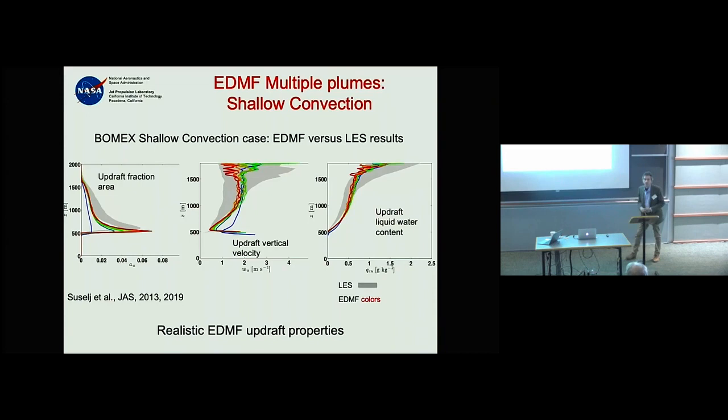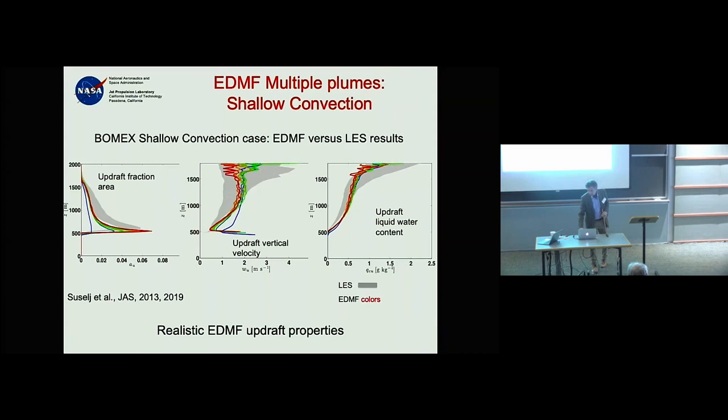The reason you don't see differences in the mean thermodynamic variables is because the updraft properties are well represented, which is why the multiple plumes intuitively do a good job.